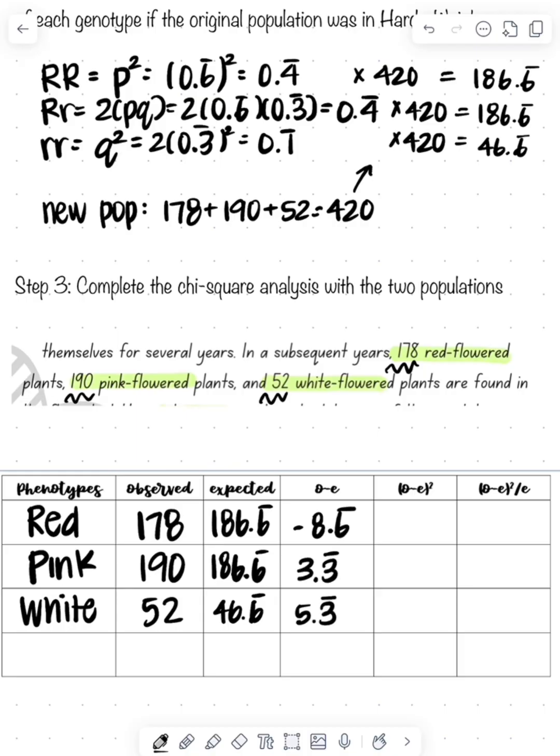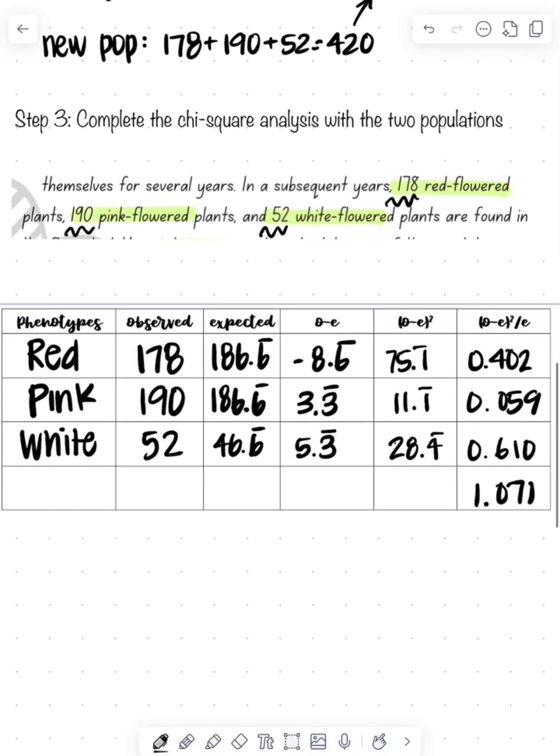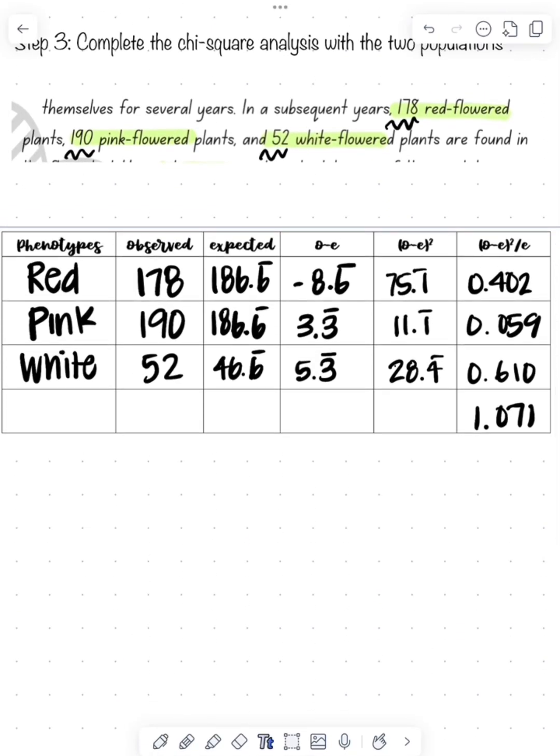Then we're going to do the observed minus expected squared. I saved all these in my calculator just so I would have the accurate numbers. You should keep your decimals to probably the hundredth place. Then we do the observed minus expected squared over the expected, which gives us our chi-square of 1.071.